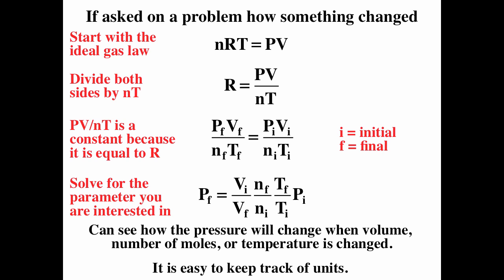You solve for R, then solve for whatever you're looking for. PV over NT at final conditions must equal PV over NT at initial conditions. Solving for P_final by dividing by V_final, multiplying by N_final, and multiplying by T_final gives: P_final = (V_initial/V_final) × (N_final/N_initial) × (T_final/T_initial) × P_initial.